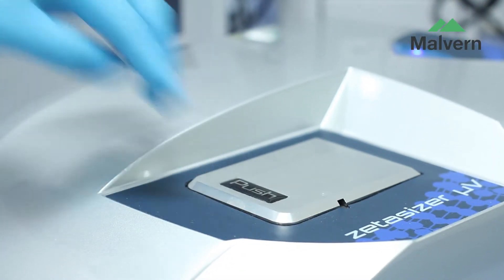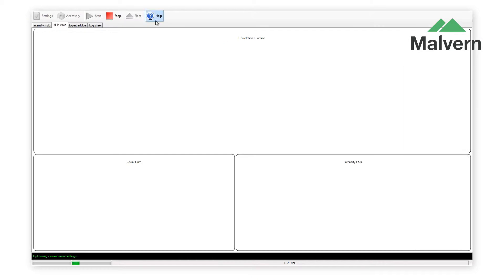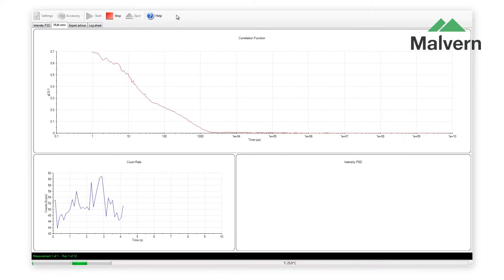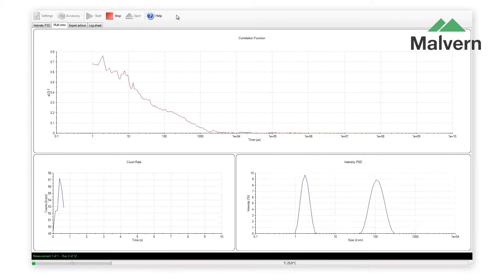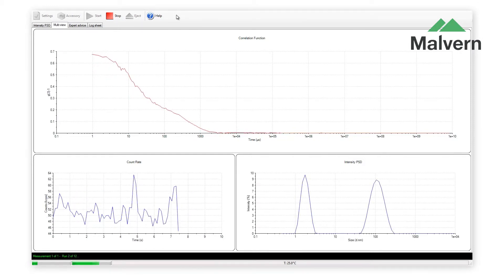If the aggregation needs to be explored in more detail, thermal trend measurements can be set up quickly and easily. The Zetasizer software reports the results clearly, offering quality advice and guidance to the user.